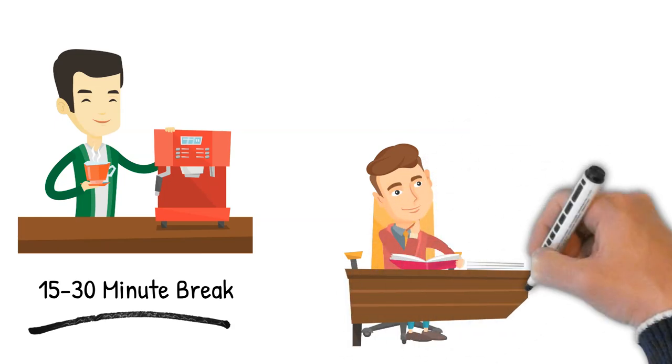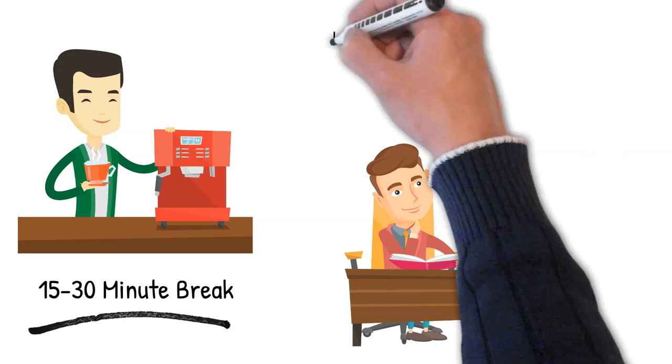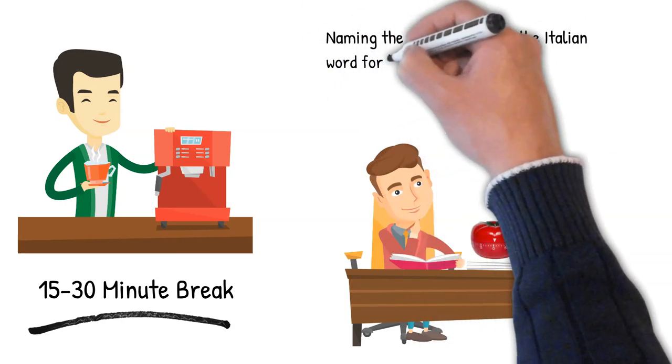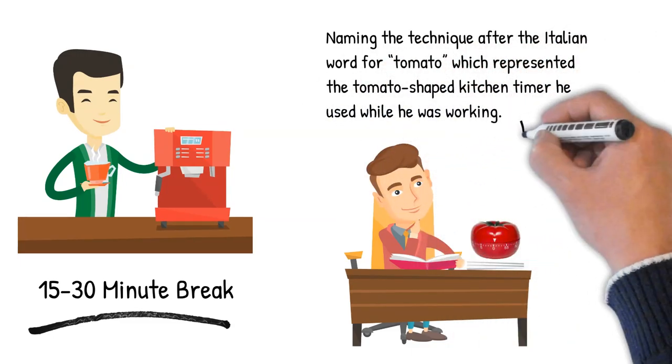Francisco Cirello first came up with the Pomodoro system in the late 1980s as a college student, naming the technique after the Italian word for tomato, which represented the tomato-shaped kitchen timer he used while he was working.